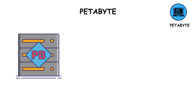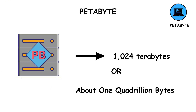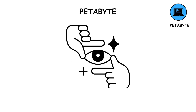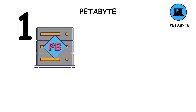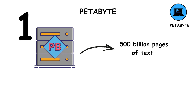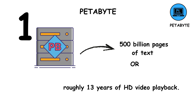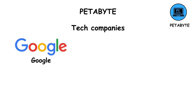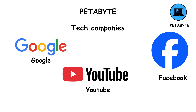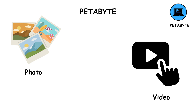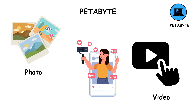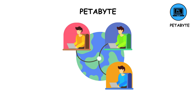A petabyte equals 1,024 terabytes, or about 1 quadrillion bytes. To put that into perspective, one petabyte could hold around 500 billion pages of text, or roughly 13 years of HD video playback. Tech companies like Google, YouTube, and Facebook manage petabytes of data every single day. When you upload a photo or video to social media, it becomes part of those enormous petabyte-scaled databases that store the world's digital life.